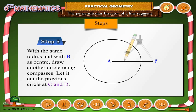Step 3: With the same radius and with B as center, draw another circle using compasses. Let it cut the previous circle at C and D.